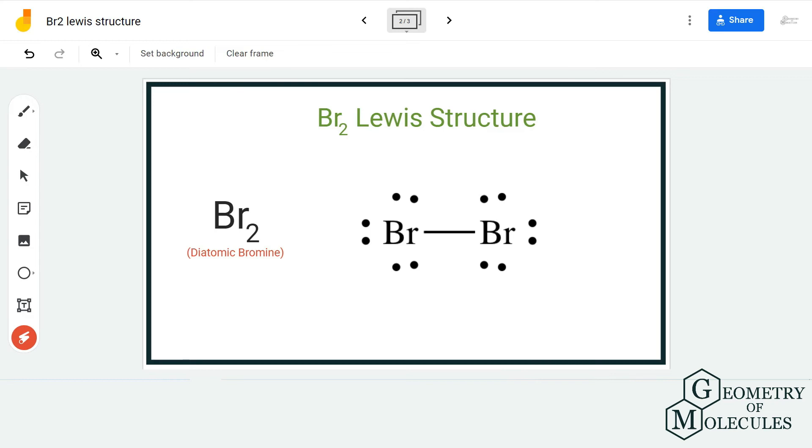As you can see, each bromine atom has eight valence electrons. After sharing one bond, it has a complete octet structure. Both these bromine atoms have complete octets, and this is the Lewis structure for Br2, which has a single bond between two bromine atoms and both these atoms have a complete octet.